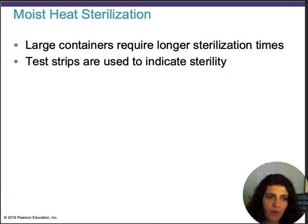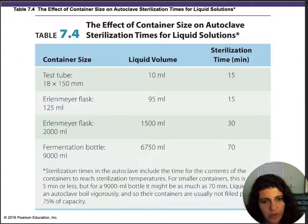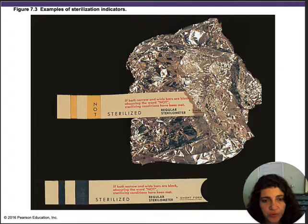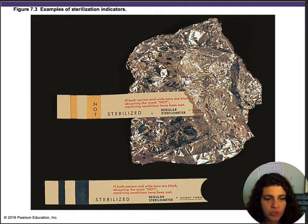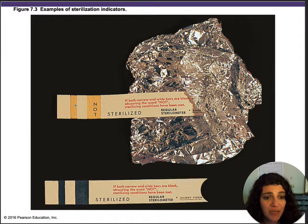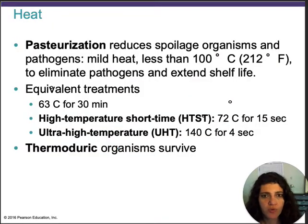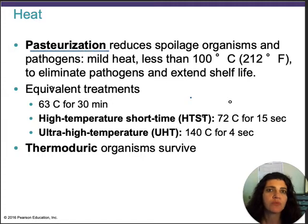Large containers require long sterilization times. There are test strips and tapes that you can put on bottles or equipment being sterilized — for utensils like forceps, you wrap them and autoclave them. The tape changes color when sterilization is complete, so you know the sterilization was effective.